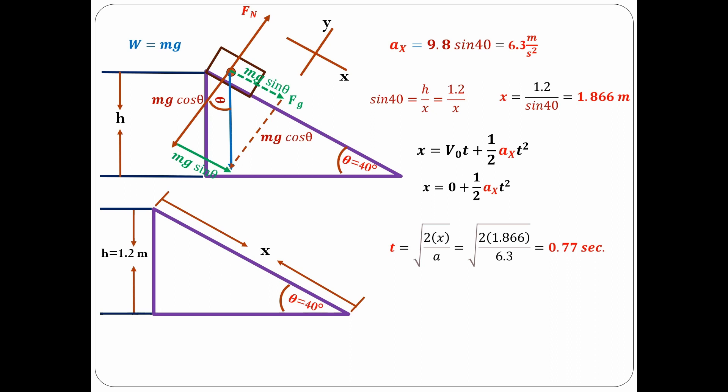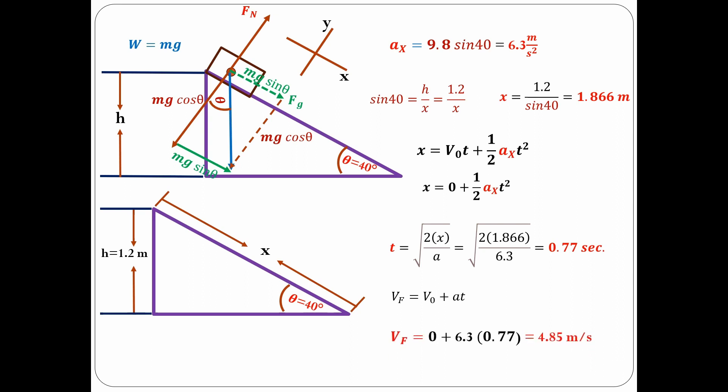To solve for the final speed of the block before it hits the ground, we use another kinematics formula: final velocity equals initial velocity plus acceleration times time. Substituting the known values of acceleration and time, we get final velocity equals 4.85 meters per second. That is the end of this lecture. Thank you.